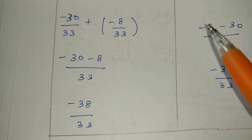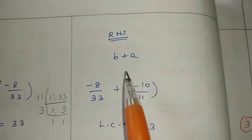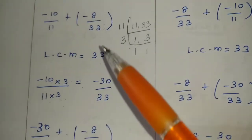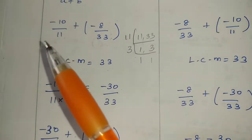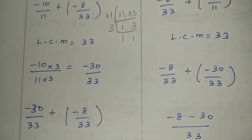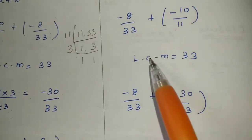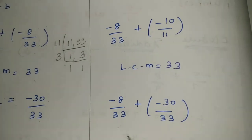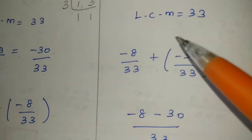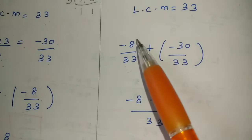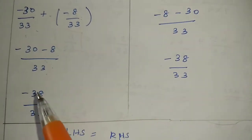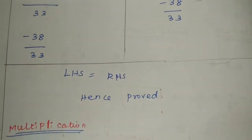So LHS equals minus 38 by 33. For RHS, B plus A: minus 8 by 33 plus minus 10 by 11. LCM is 33. This also gives minus 38 by 33. So LHS is equal to RHS, hence proved for addition under commutative property.